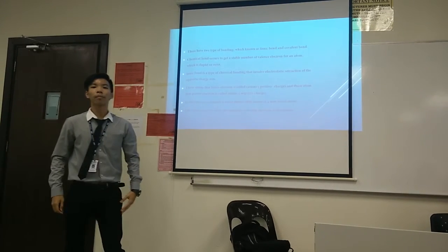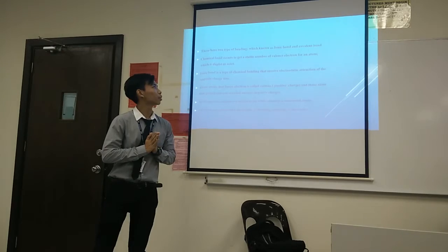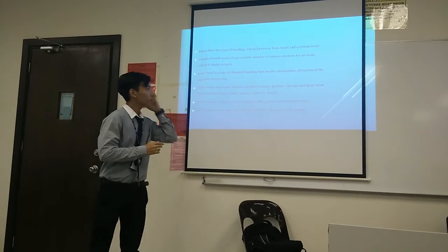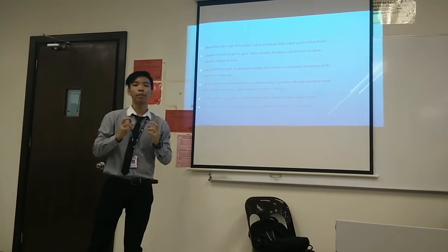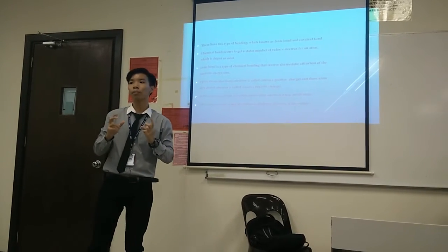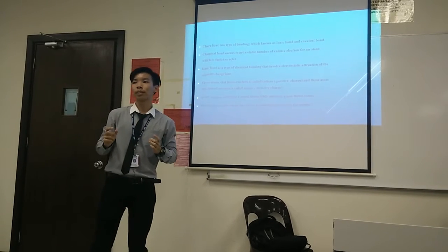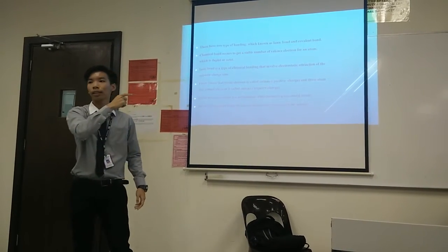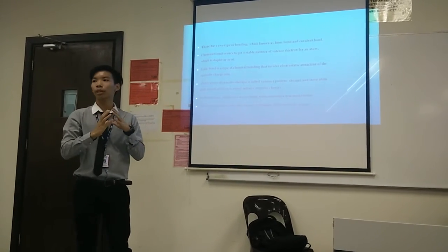I'm now going to explain about metallic bonding, and I'm going to touch a little bit about ionic bond and covalent bond. Before that, we have to know what is the reason that chemical bonds occur. Chemical bonds occur to get a stable number of valence electrons for an atom, which is the duplet number or octet — two or eight. You have to achieve that number to become a stable atom.